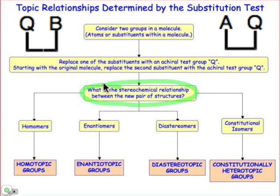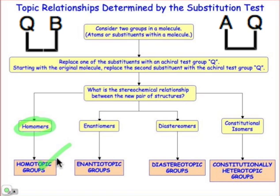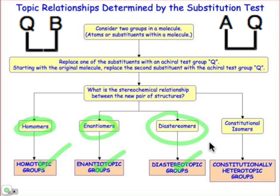Are they homomers, enantiomers, diastereomers, or constitutional isomers? If the new structures are homomers, then the original groups are homotopic. If we've generated a pair of enantiomers, the original groups are enantiotopic. If we've created a pair of diastereomers, the original groups are diastereotopic. And if we've generated constitutional isomers, the original groups are constitutionally heterotopic.